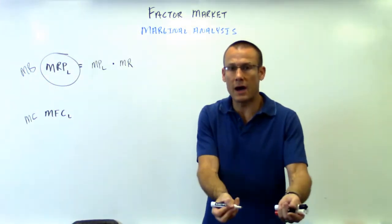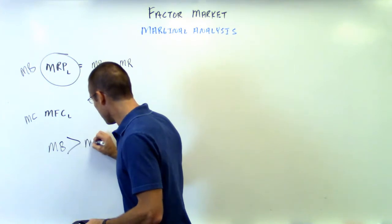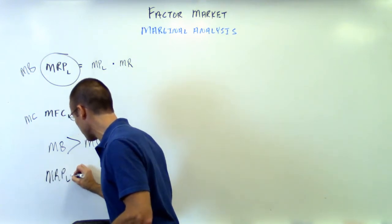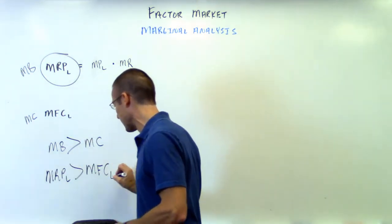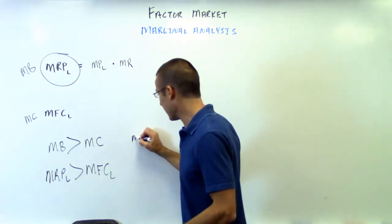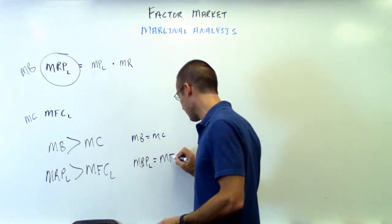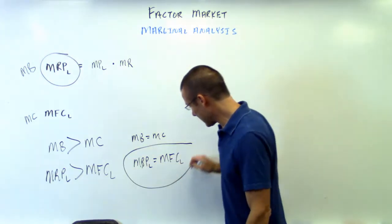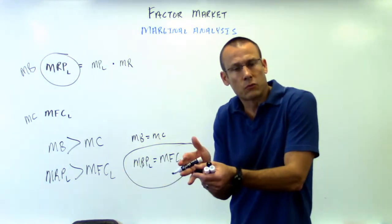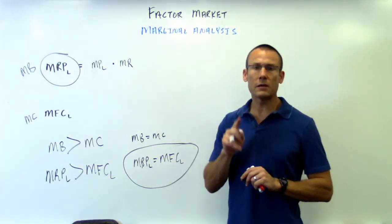So how many laborers should we hire? In economics, if marginal benefit is greater than marginal cost, do it. So if the marginal revenue product of labor is greater than the marginal factor cost of labor, hire them. Keep hiring more laborers until MB equals MC — until MRP_L equals MFC_L. This tells us how many laborers to hire. Hire all the way to that point.